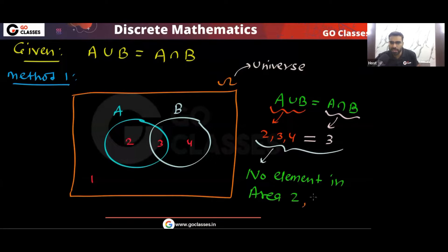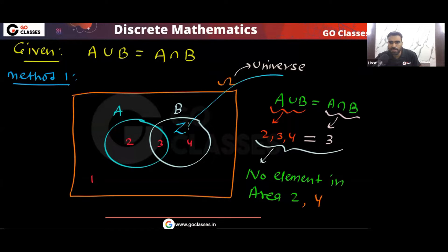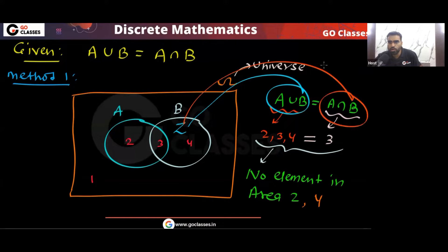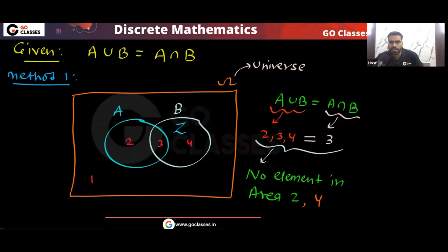Also, there is no element in area four. Can you have some element in area number four? You cannot. Because if you have some element there, that element would belong to A union B but not to A intersection B, so they would not be equal. Therefore, we cannot have any element in area number four either. So: no element in area two, no element in area four.